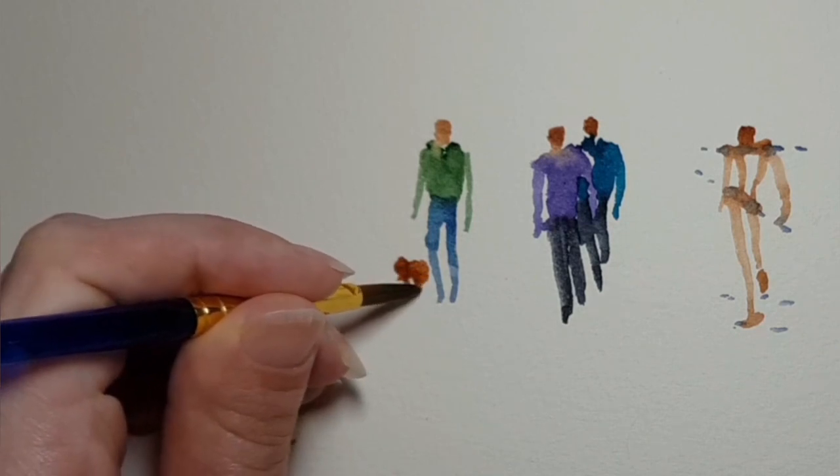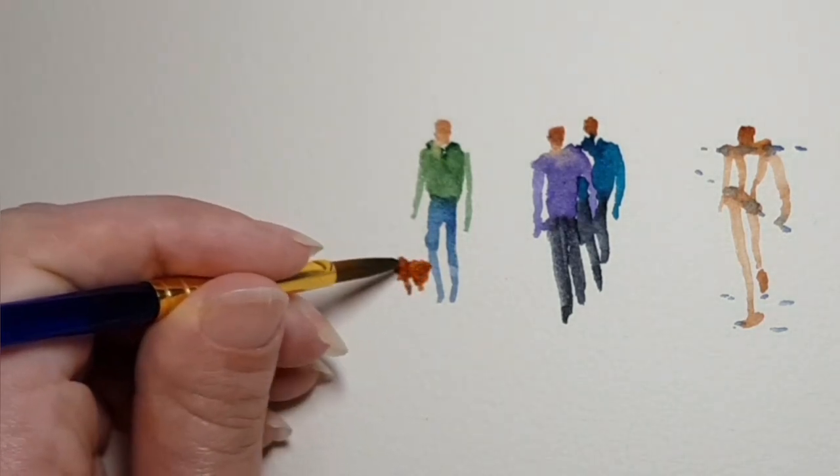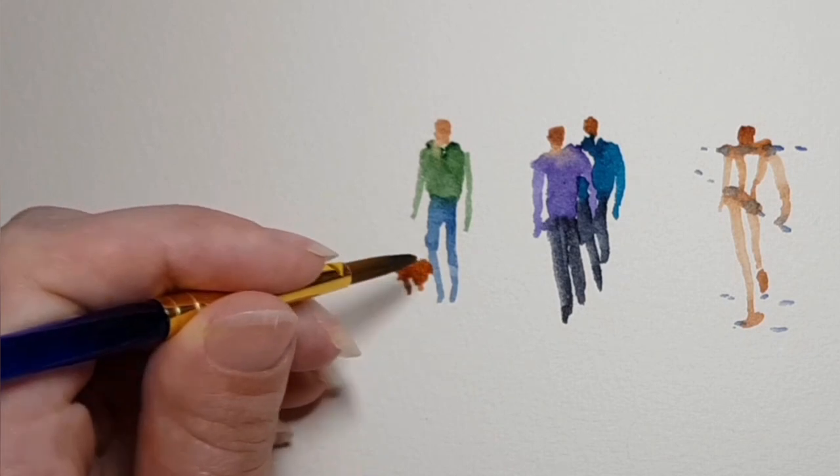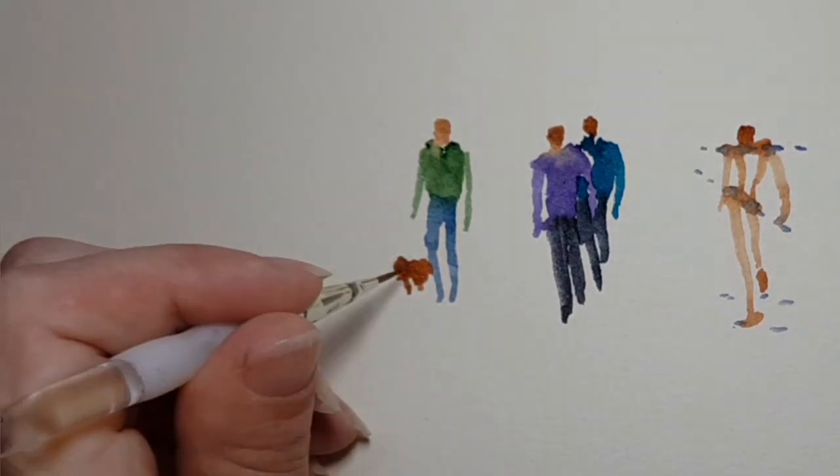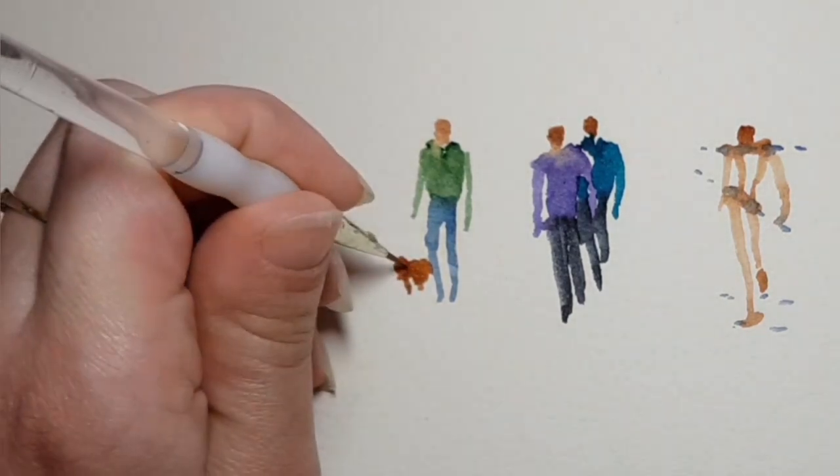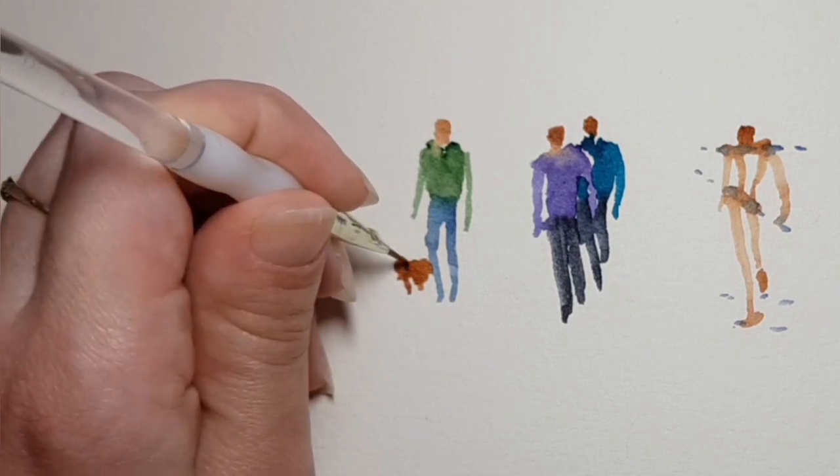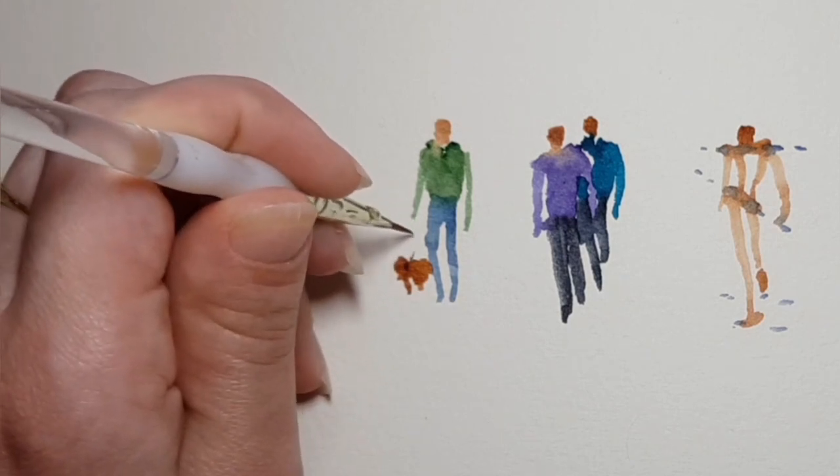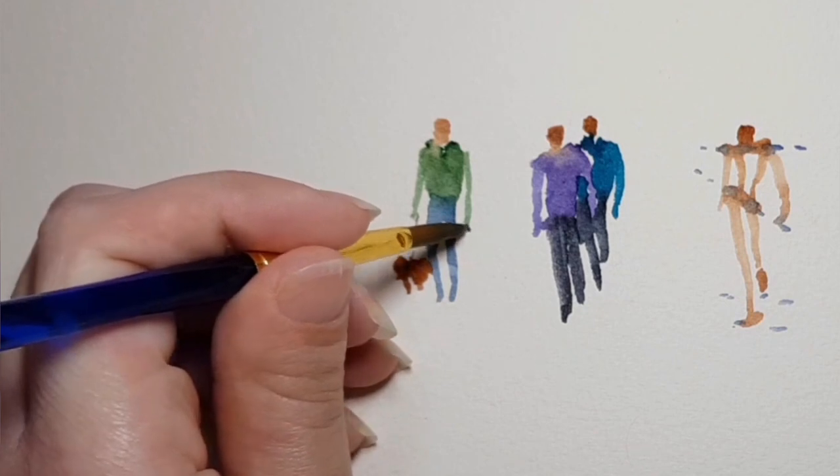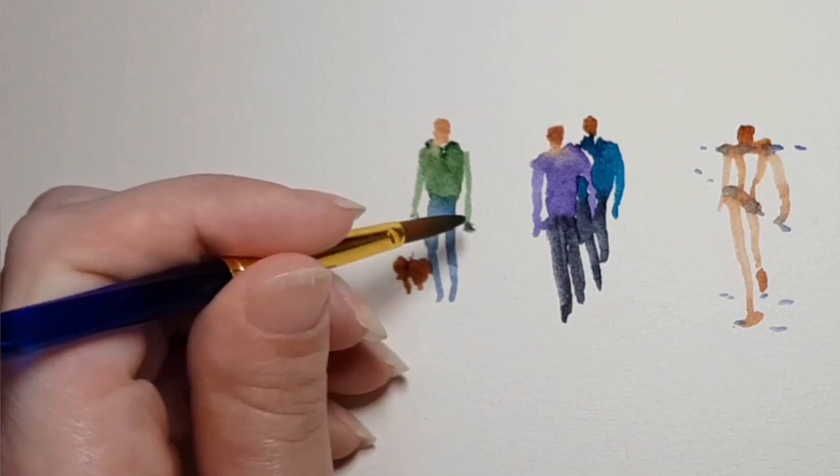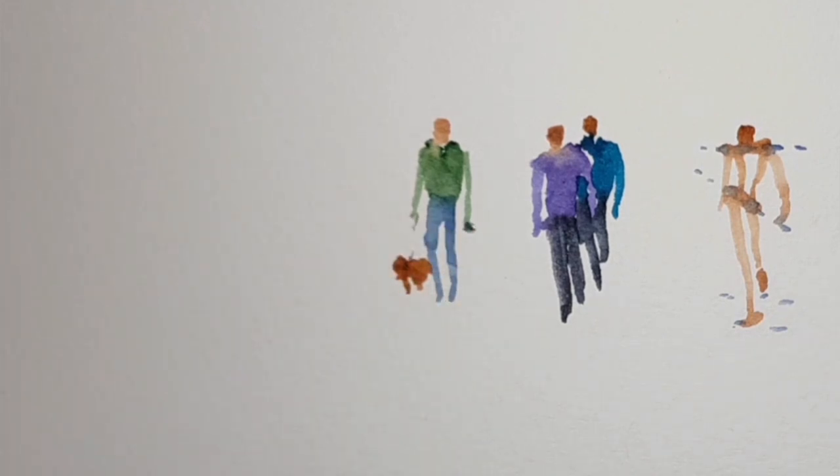If you want to add tiny details like the leash, use a double zero brush. It's not necessary to draw the entire leash, even showing part of it can be sufficient. Especially if the background is busy, it might be better to keep things minimal.